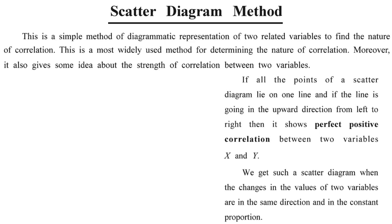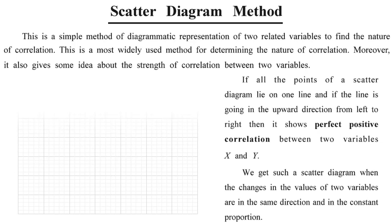If all the points of a scatter diagram lie on a single line going from the lower left to the upper right — that is, from left bottom to right top — it shows a perfect positive correlation.